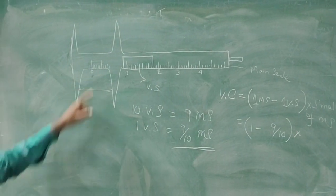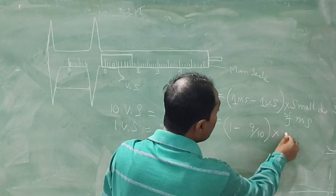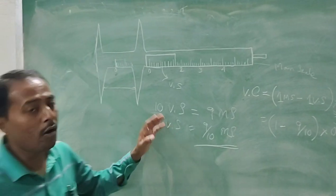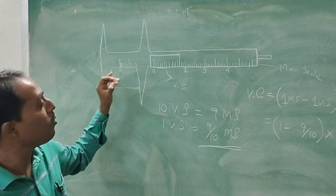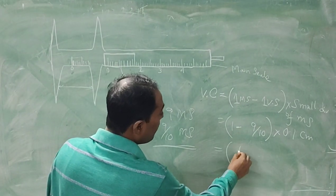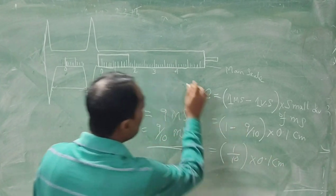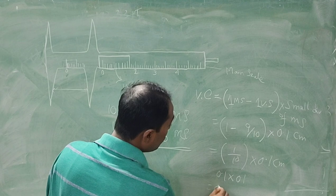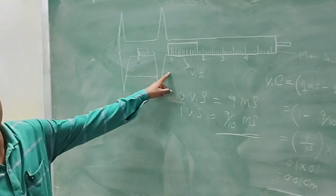The smallest division in the main scale — suppose the small division in the main scale is 0.1 centimeter. This may vary from instrument to instrument, so we have to check. So 1 minus 9/10 equals 1/10, again multiplied with 0.1, this comes to 0.01 centimeter. This is the Vernier constant of this Vernier caliper.